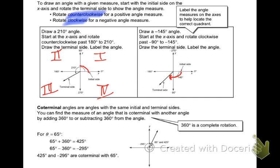Coterminal angles are angles with the same initial and terminal side. You can find the measure of an angle that is coterminal with another angle by adding 360 or subtracting 360 from the given angle. So a 65-degree angle is the same thing as a 425-degree angle.